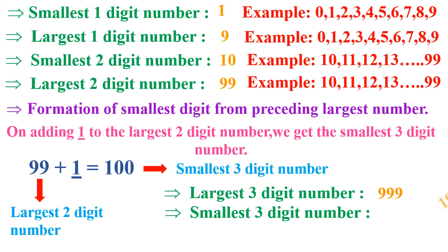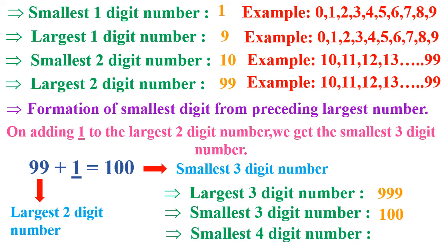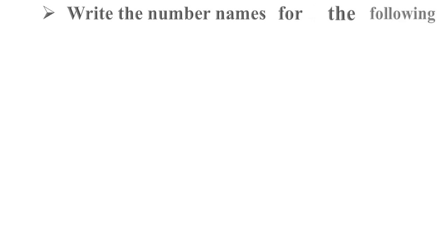The smallest 3-digit number is 100. And the largest 3-digit number, from 100 to 999, is 999. If we add 1 to the largest 3-digit number, 999, we get the smallest 4-digit number, which is 1000. Now, we have to study how to write number names. I am giving some numbers to you and you have to write down the number name for the following.